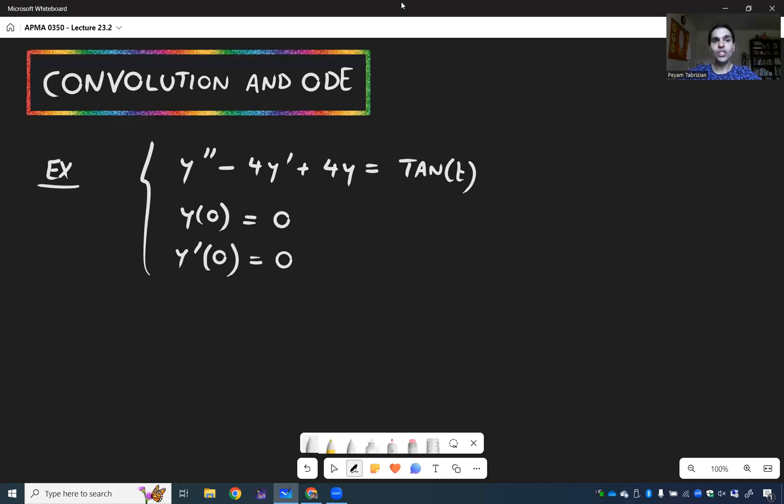What's nice about convolution is that it allows us to solve ODEs where the right-hand side isn't even part of our Laplace transform table.